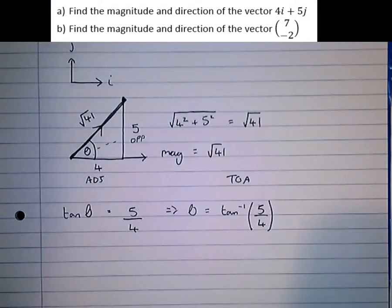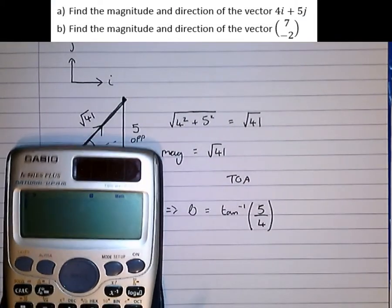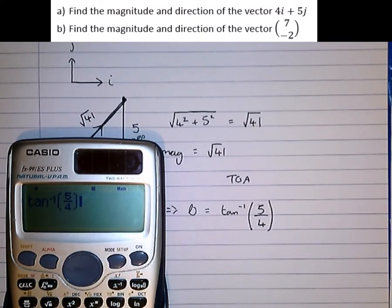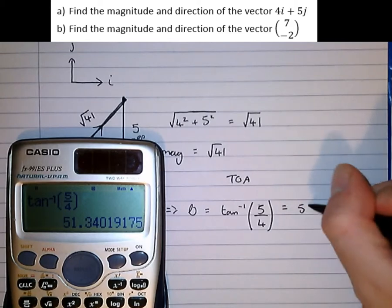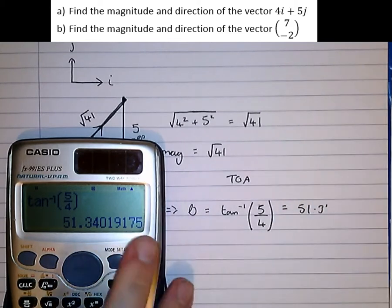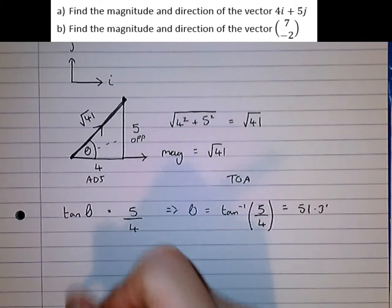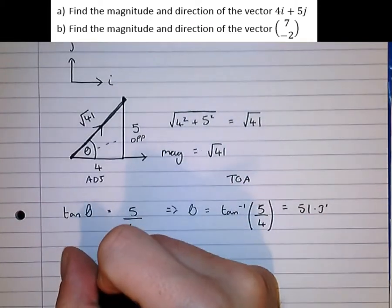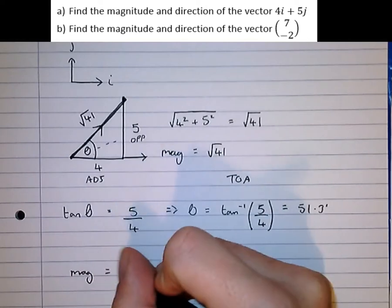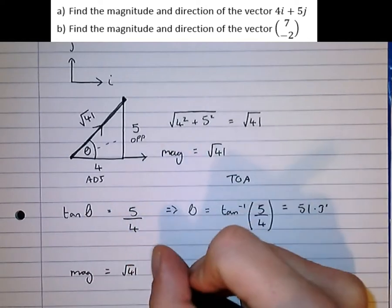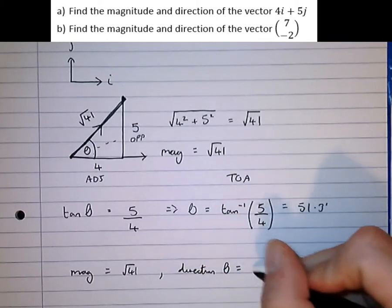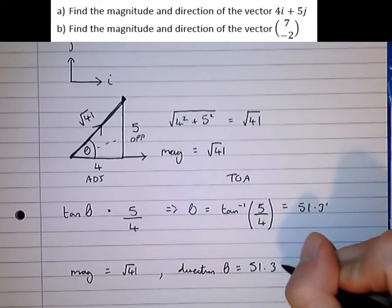Let's work it out. Inverse tan of 5 over 4 is equal to 51.3 degrees. Therefore the direction is 51.3 degrees. So to summarize, magnitude equals root 41, direction theta equals 51.3 degrees.